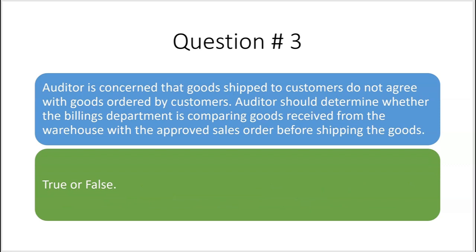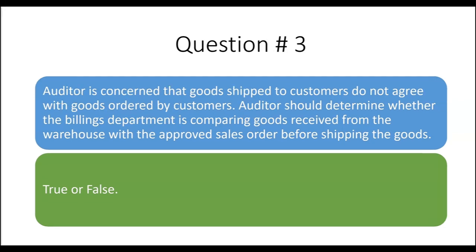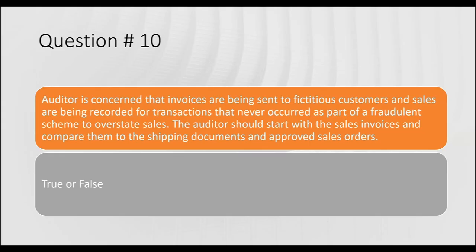Number three: an auditor is concerned that goods shipped to customers do not agree with goods ordered — for example, 110 cases were shipped but only 100 were ordered. It states that auditors should determine whether the billings department is comparing goods received from the warehouse with the approved sales order before shipping the goods — true or false? Leave your answer in the comments section.